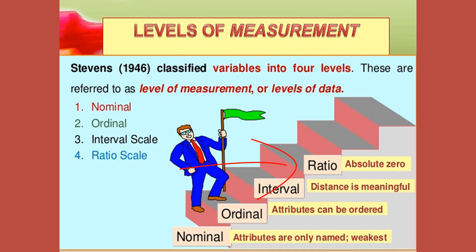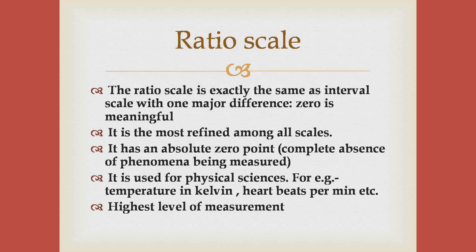The fourth or the highest level of measurement is the ratio scale, which is quantitative in nature. The ratio scale allows any researcher to compare the intervals or differences. The ratio scale possesses a true zero point or origin, and this is used in physical measurements.